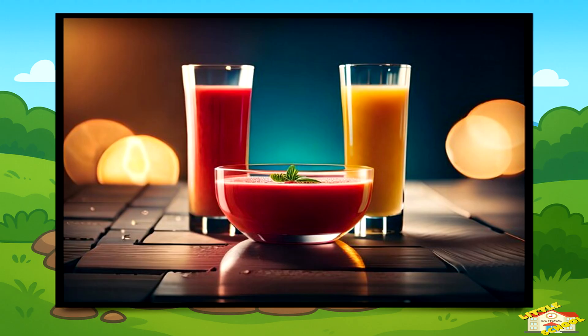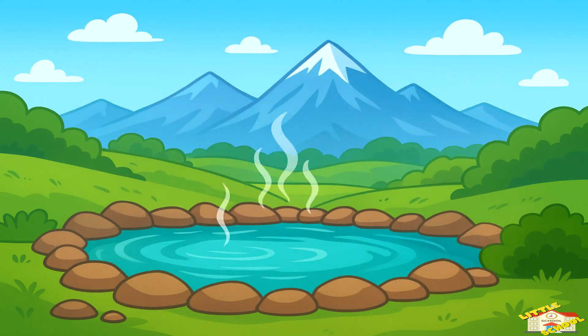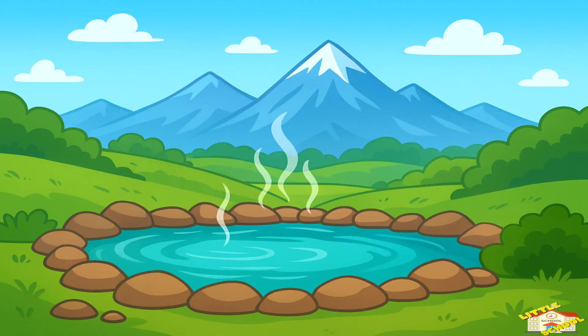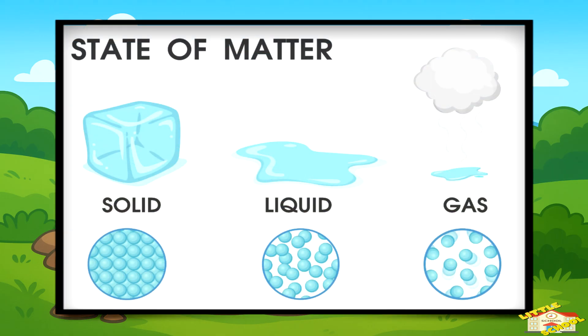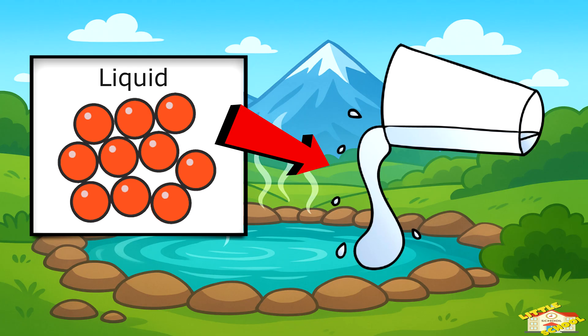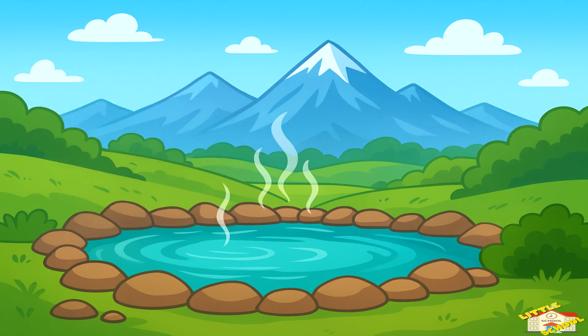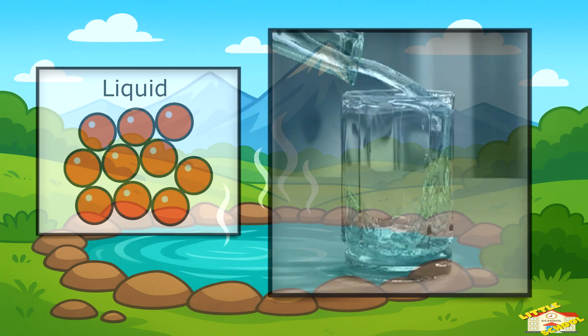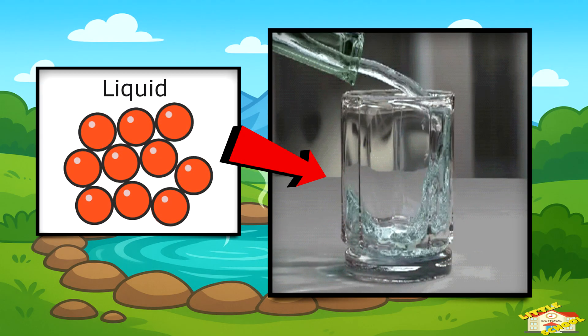How do liquids behave? The particles in a liquid are not as tightly packed as in solids, but they're not completely free like in gases. They can slide past each other, which is why liquids can flow. That's why you can pour water, milk, or soda — they move smoothly because the particles are slipping around.